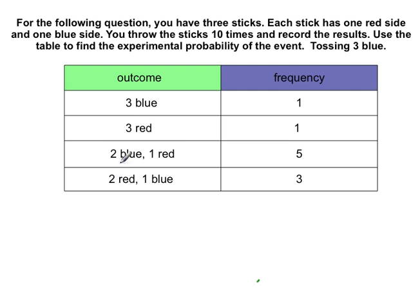All right, so experimental probability is the fraction, and you have 3 blue that happened one time, 3 red that happened one time, 2 blue and 1 red that happened five times, and 2 red and 1 blue happened three times. So the total frequency is going to add up to 10. 1 plus 1 plus 5 plus 3 is 10. So it's going to be total outcome out of the total, and the outcome is what you're testing. It's the experiment or the event.